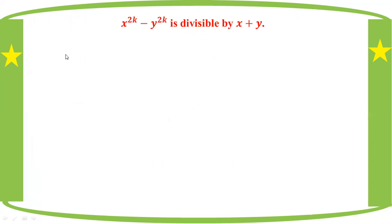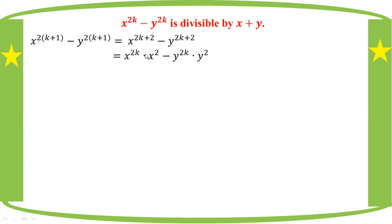For n equal to k plus one, we need to show that x to the power 2(k+1) minus 1 to the power 2(k+1) is divisible by x plus y. That is, x to the power 2k plus 2 minus 1 to the power 2k plus 2, which equals x to the power 2k plus 1 squared minus 1 to the power 2k plus 1 squared.